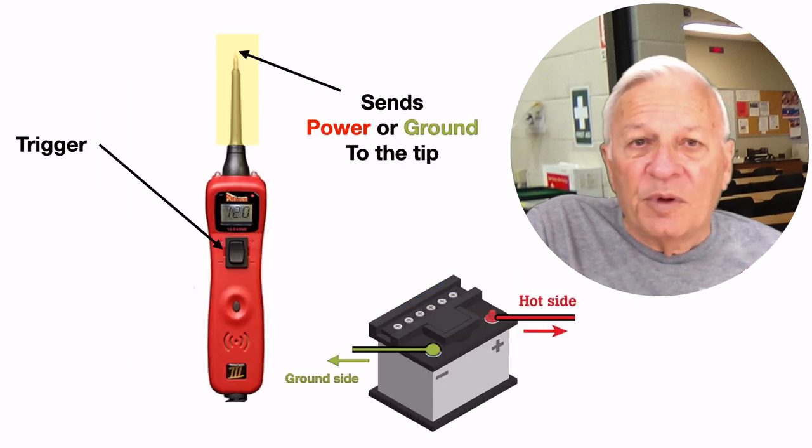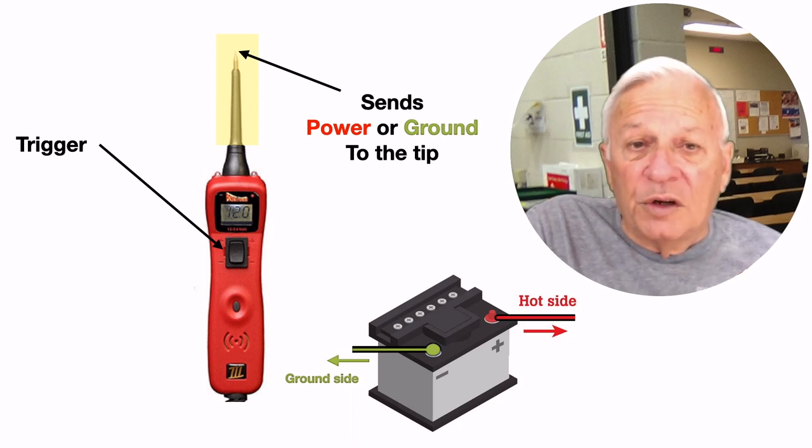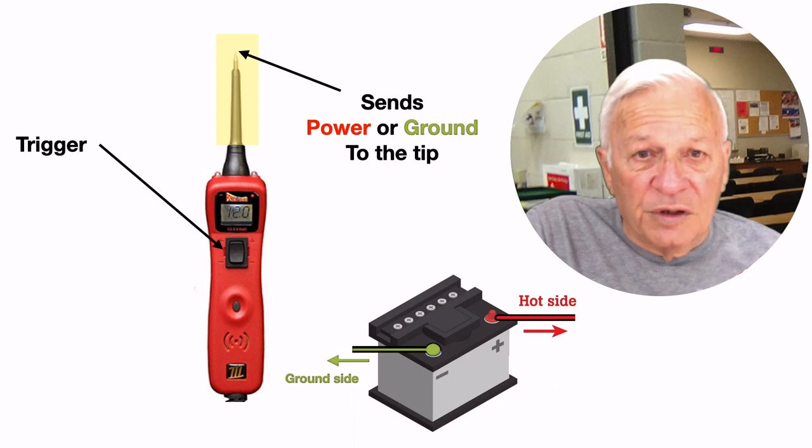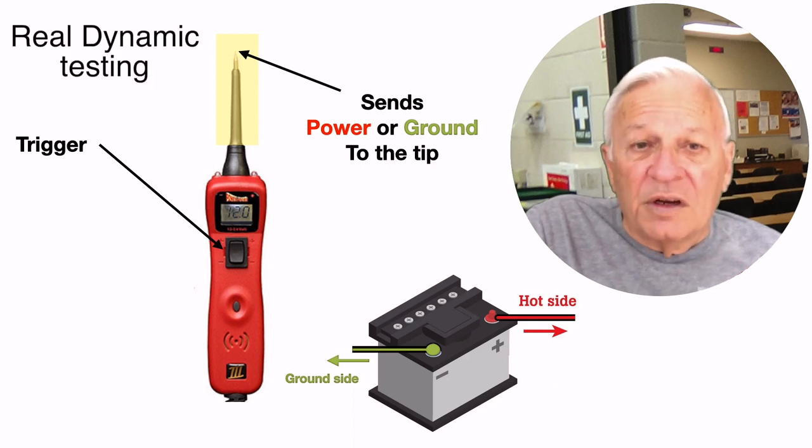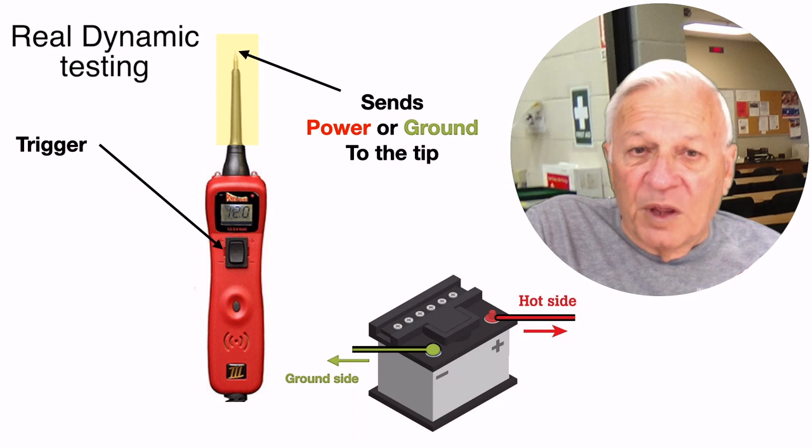Now since the power probe is connected to the battery, you can apply battery power or battery ground directly to the tip of the tool. You can energize and activate components to verify their correct operation. Now this is real dynamic component testing, and the only true way to test an active component.